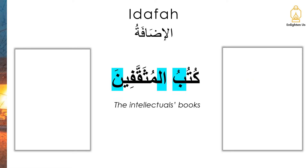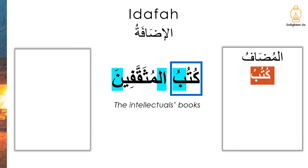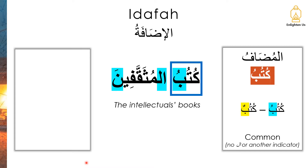Let's look at another example: Kitabu al-mutaqafiina — the intellectuals' books, which could mean books written by intellectuals. Kitabu is our mudhaaf. In its original form it would have had tanwin, so the absence of tanwin meets that condition. It's also common, because there's no al or any other indicator of properness.